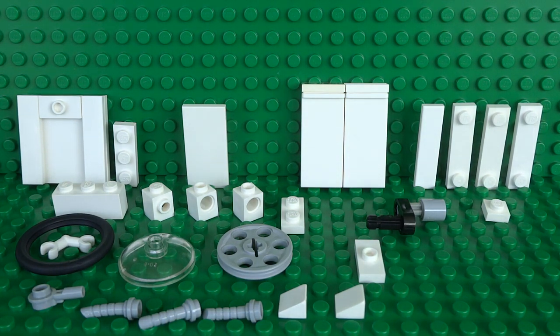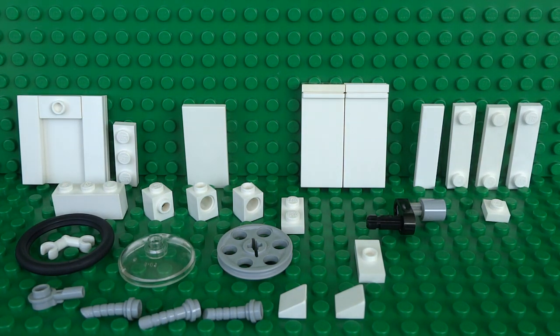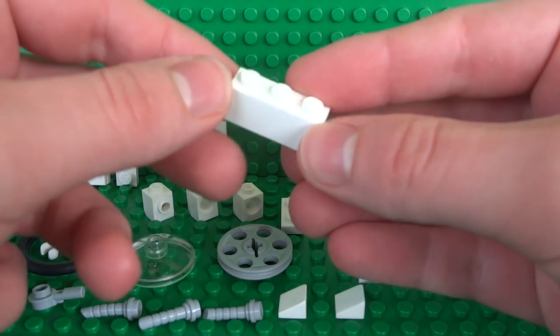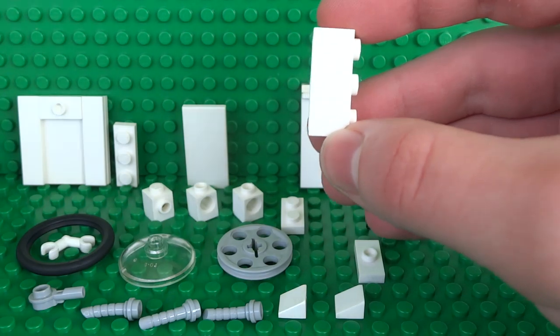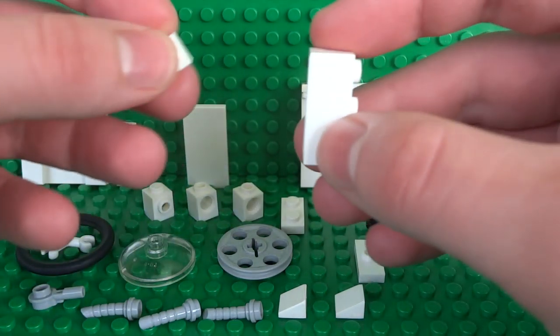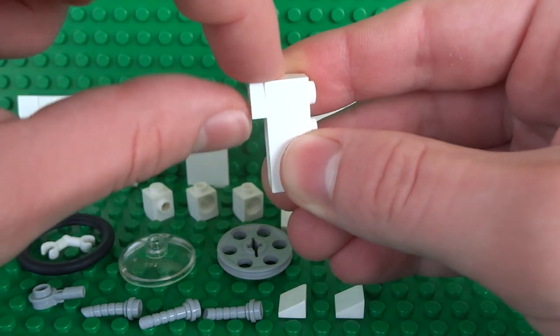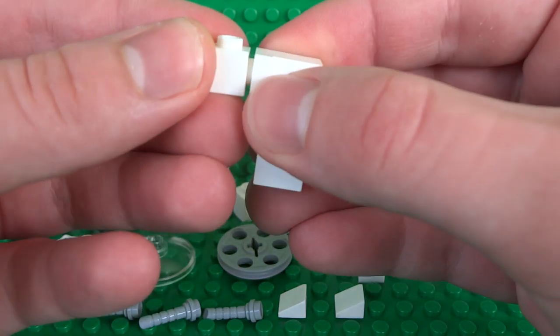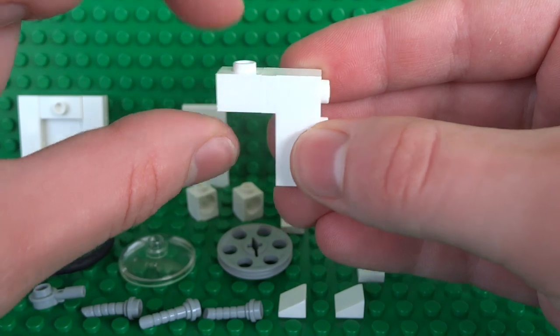So now that all of those sub assemblies are out of the way, we can start on the actual main section of the washing machine. So we'll build this sideways with a 1x3 brick. Then a 1x1 plate over on the top there. Then next to the 1x1 plate, a 1x1 brick with the stud facing on the top.